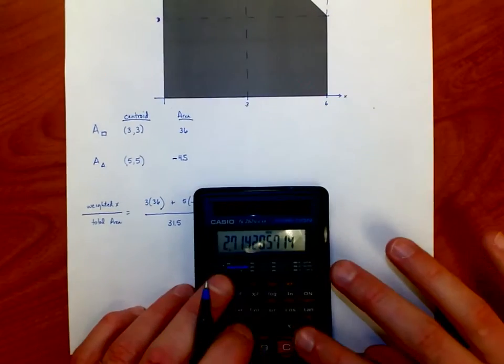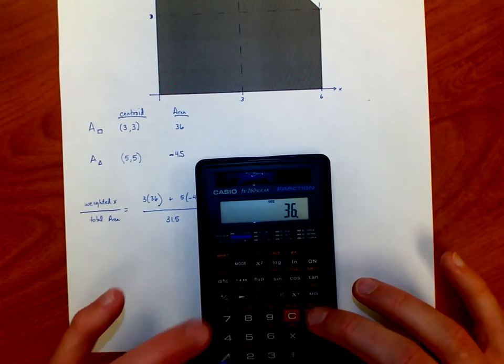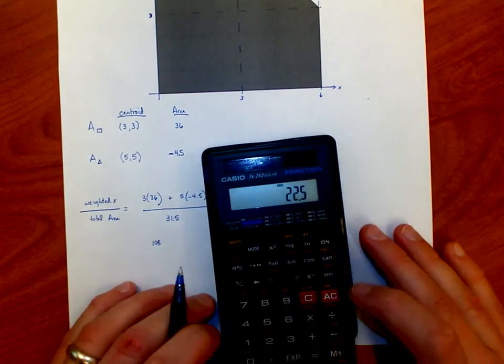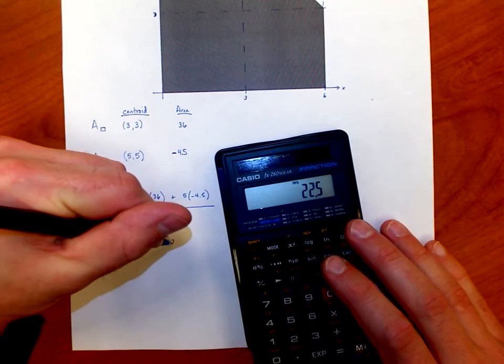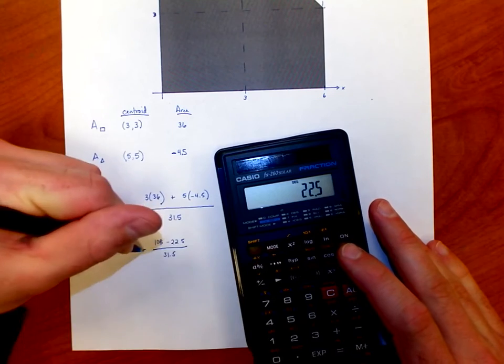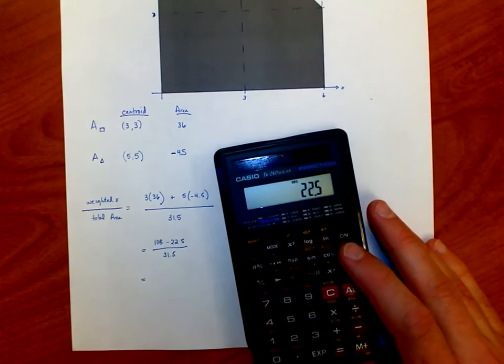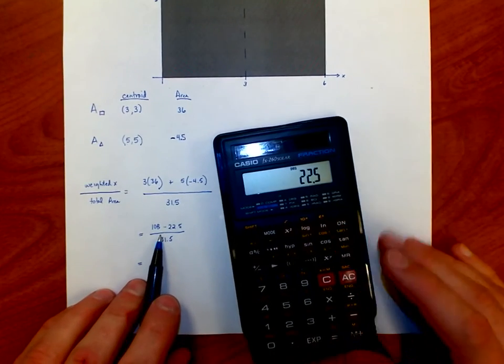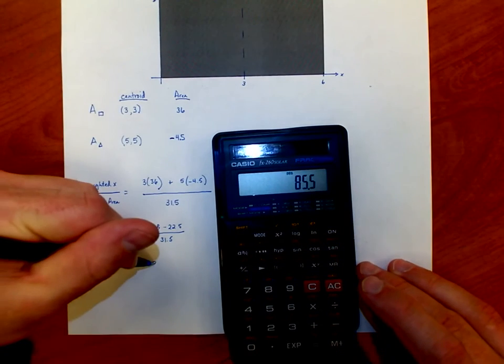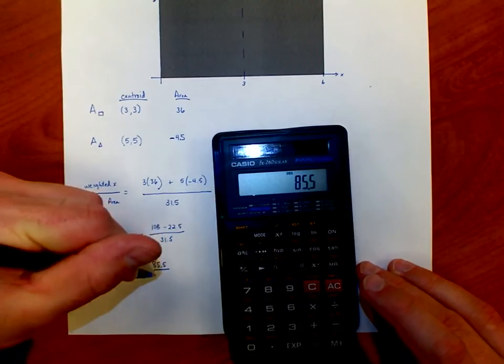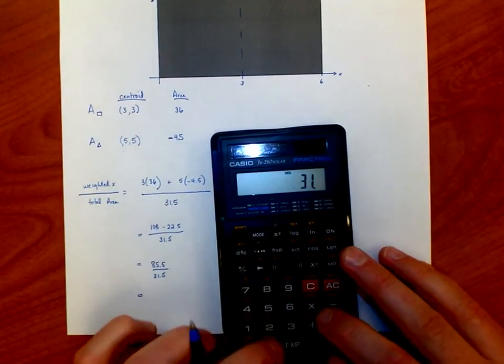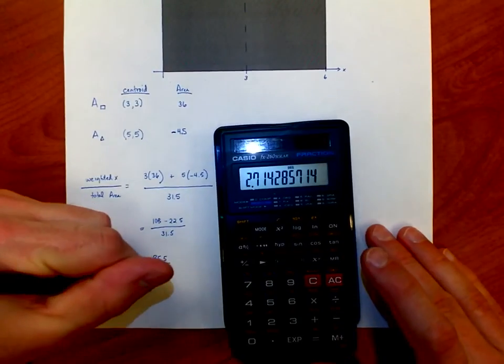Now, let's go through and do some multiplication. 3 times 36 is 108, and 5 times 4.5 is 22.5, but it's negative this time because it's a subtracted area that we're removing. And if I take 108 and subtract 22.5, I end up with 85.5. Well, that sounds like a familiar number if you just watched the other video because I know when I divide that by 31.5, I get 2.71.